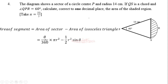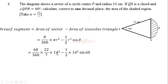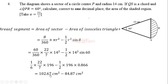We substitute theta equals 60, pi equals 22 over 7, and radius equals 14 centimeters. 14 squared is 196, and we simplify. Sine 60 is 0.866. When we evaluate this, we get 102.67 centimeters squared minus 84.87 centimeters squared.